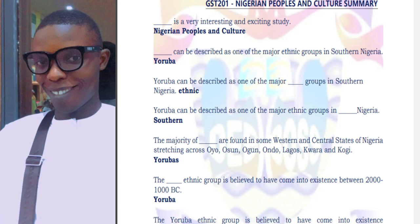If you don't know these states in Nigeria, you need to go and learn — because in our younger days in formal educational structures, they taught us and we were reciting these states and capitals. Nigeria has about six geopolitical zones, and these zones have different states under them. The states that have a majority of Yorubas are majorly within the south-western zone.